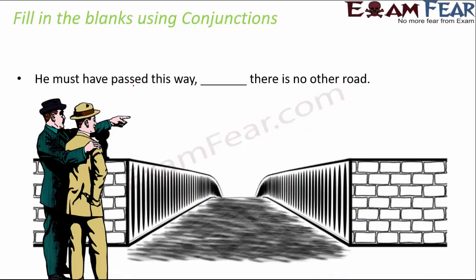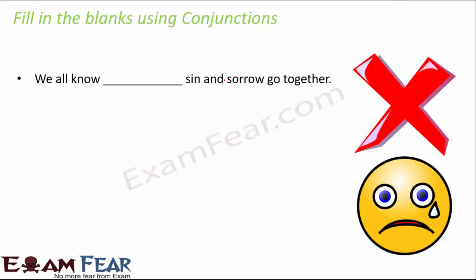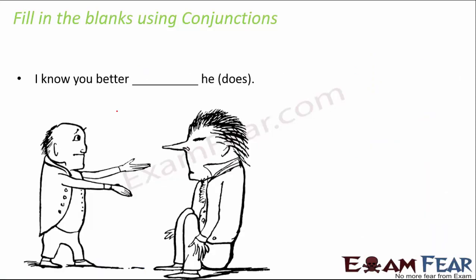'He must have passed this way ___ there is no other road.' Two people are discussing that he must have passed this way because there is no other road. So instead of 'because,' you can also use 'as': 'He must have passed this way as there is no other road.' Next: 'We all know ___ sin and sorrow go together.' Answer: 'We all know that sin and sorrow go together.'